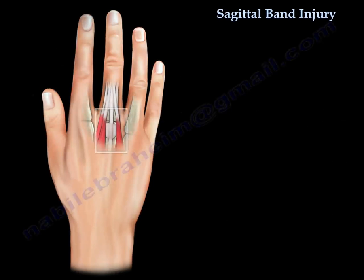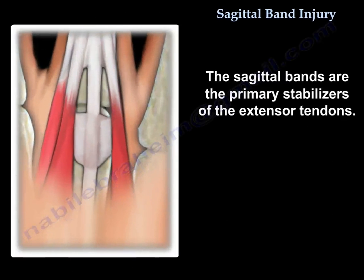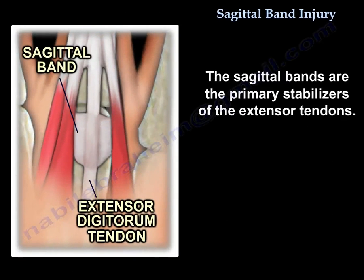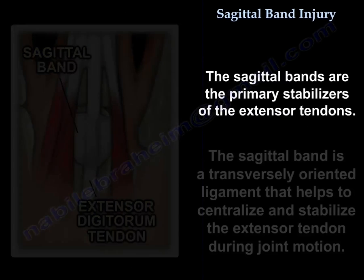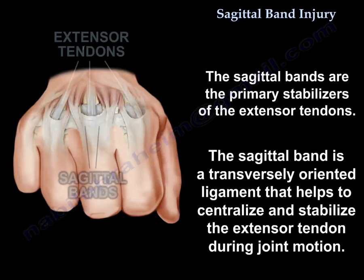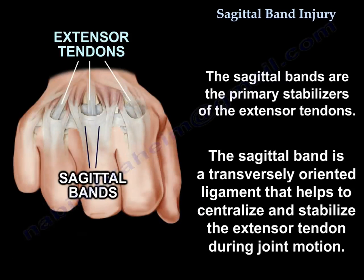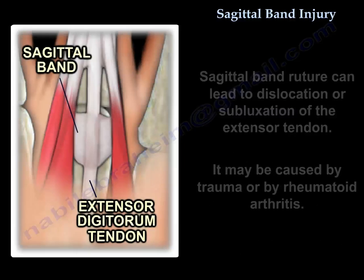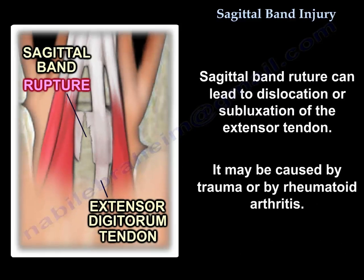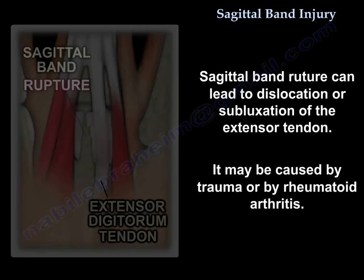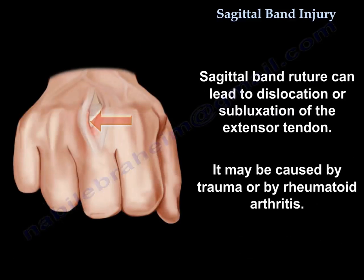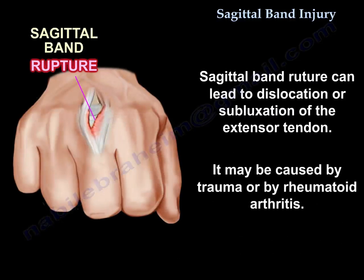Sagittal Band Injury. The sagittal bands are the primary stabilizers of the extensor tendons. The sagittal band is a transversely oriented ligament that helps to centralize and stabilize the extensor tendon during joint motion. Sagittal band rupture can lead to dislocation or subluxation of the extensor tendon. It may be caused by trauma or by rheumatoid arthritis.